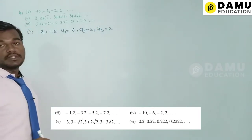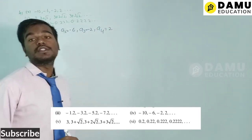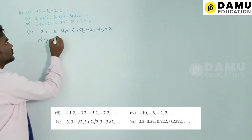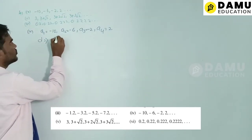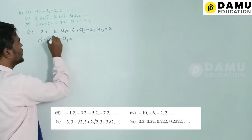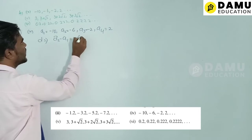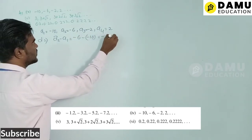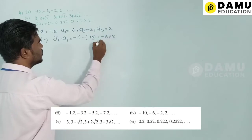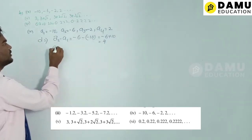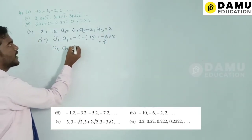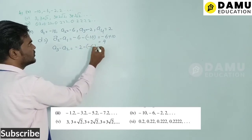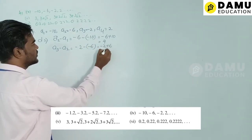The common difference d = a2 − a1 = −6 − (−10) = −6 + 10 = 4. Then a3 − a2 = −2 − (−6) = −2 + 6 = 4.